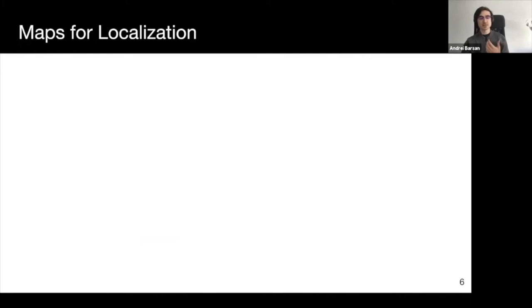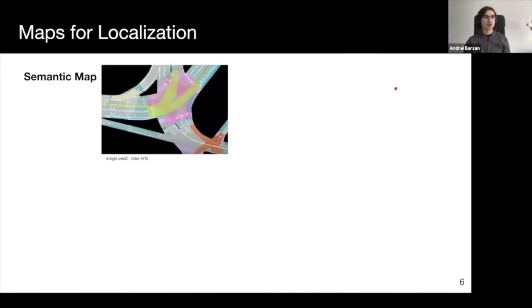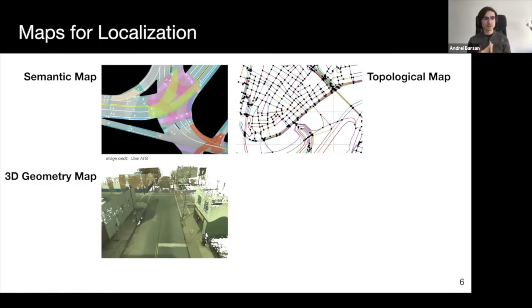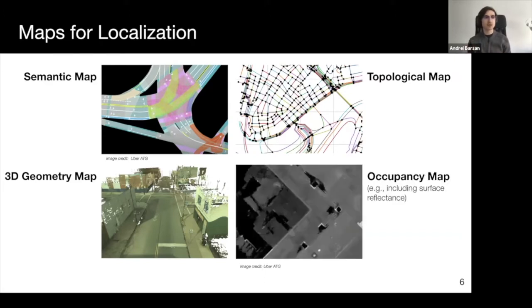There's a wide range of representations which can be used for localization maps. HD maps can be built and annotated with information such as lane boundaries, lane types, intersection types, signs, and so on. 3D geometric models can be represented as dense or sparse point clouds, surfels, or other 3D primitives. Topological maps are possibly non-metric, graph-like representations, such as those found on OpenStreetMap. Finally, simple occupancy maps can also be used. These are often represented as top-down views of the world, and can contain additional rich information such as surface reflectance or ground surface color.